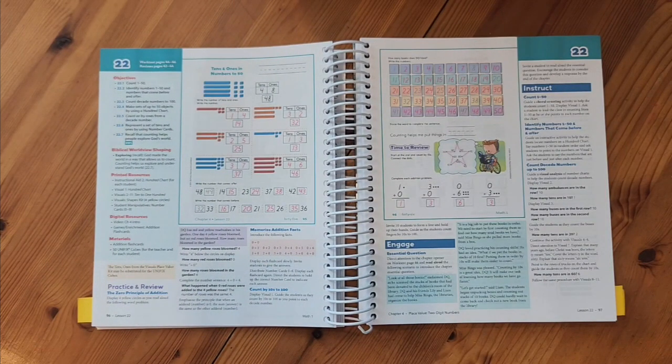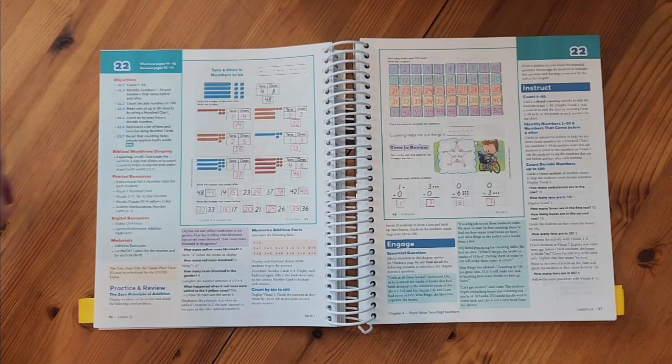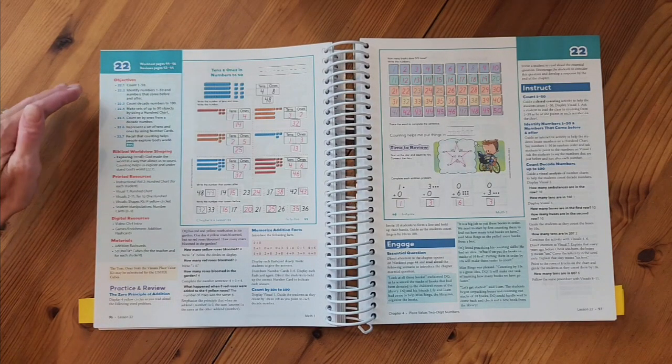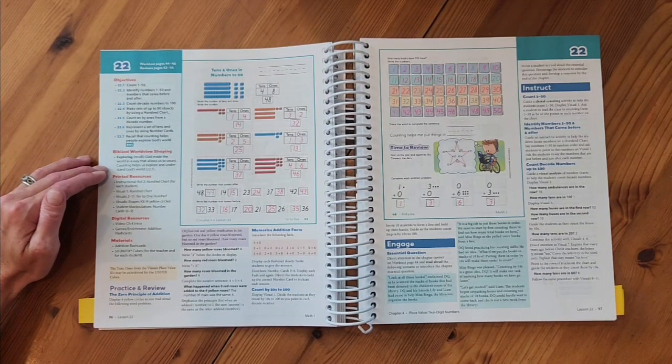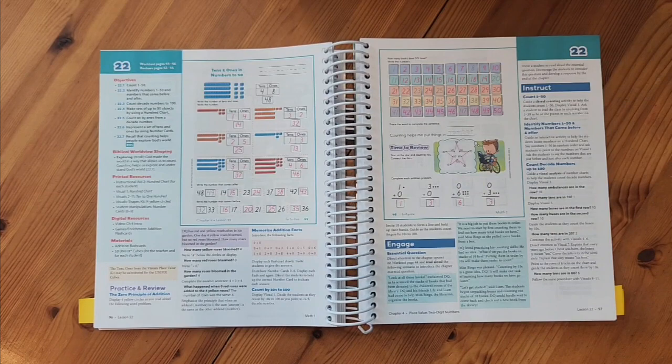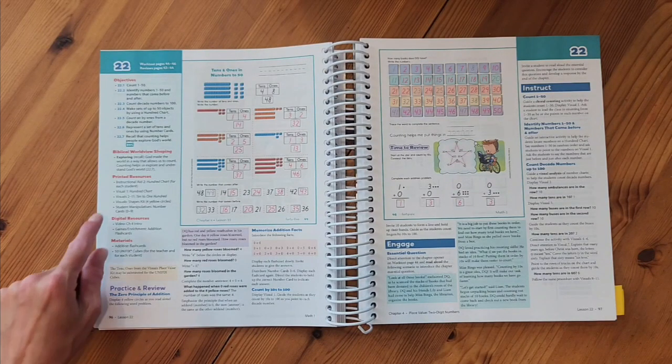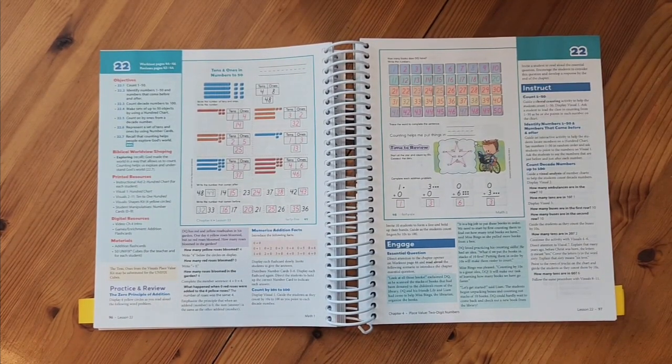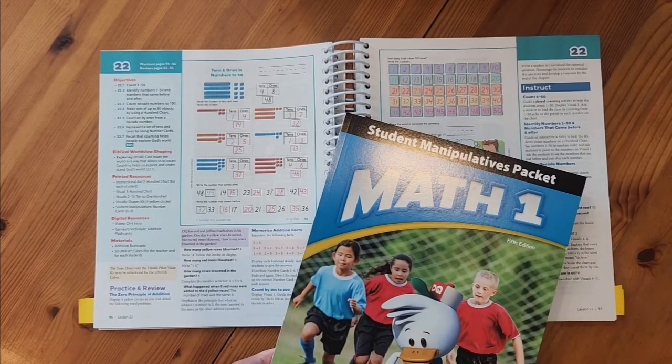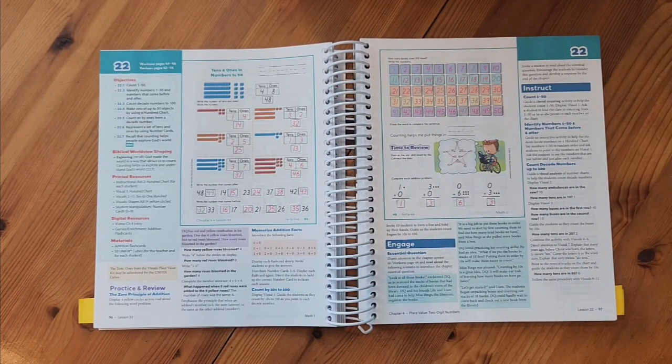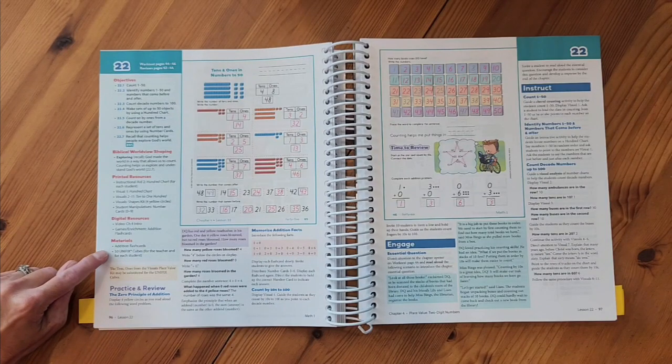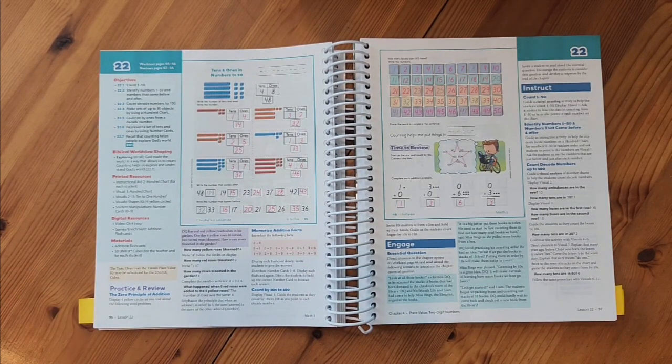Now we're ready to jump in to the first lesson of this chapter. Each lesson starts with a lesson number and the work text pages and review pages the students will need to do in their books. I also see my objectives for the day, biblical worldview shaping notes, and the printed resources. Anytime I see that I need an instructional aid, I can remember that these are in the back of the teacher edition books. I also see that I need a visual, and those I can find in my homeschool visual packet. And then I also need some student manipulatives, which I can find in my student manipulative packet. I see that there's a note here that there's a digital resource that might need, so I'm going to check the hub for that. And I might also need some additional materials like flashcards or unifix cubes for the teacher and each student.